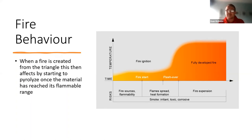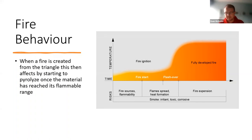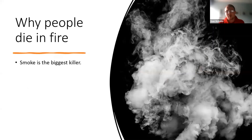Then we get what we call flashover, which I'll explain shortly. After that, there's a fully developed environment within the compartment, followed by the decay stage. When a fire can't pyrolyze any more material, it will start to die because it no longer has that perfect fire triangle mixture. If we can remove an element — like fuel or material stores — it prevents fire spread.